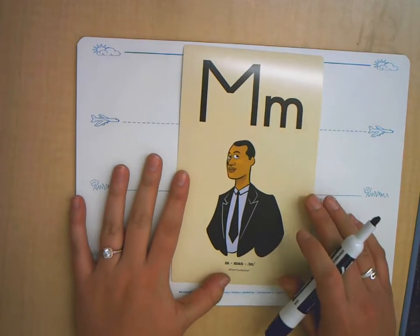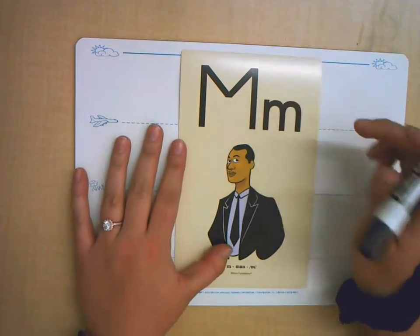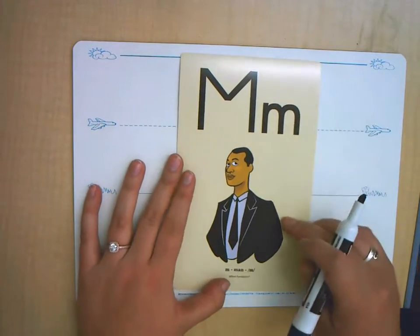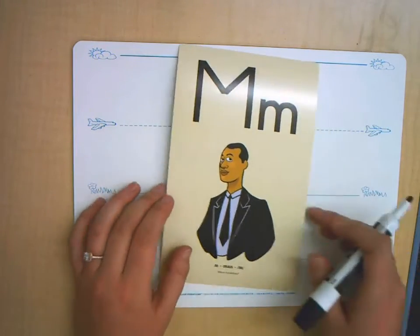This is our M card and when we are practicing the letter M we say M, man, mmm. Say it with me. M, man, mmm. Nice job.